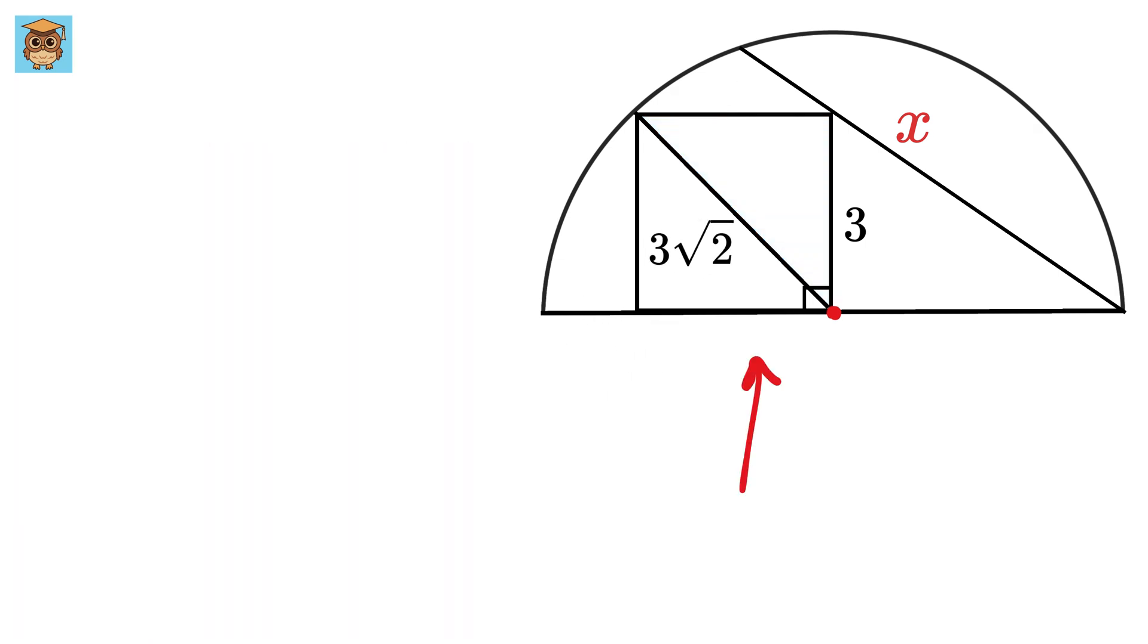Now consider this line. Since this is the right angle therefore this will also be 90 degrees and thus it will also be a right triangle. This is three and this is the same as the radius of this semicircle or three root two. So we will again use Pythagoras theorem to find the hypotenuse. Let us label it as h.